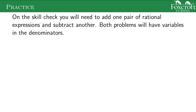On the skill check you just have to add one pair of rational expressions and subtract another — two problems, but they require a fair amount of work: multiplying, FOILing, factoring, and canceling. Both problems will have variables in the denominator, more like the second half of examples we did. When doing the subtraction problem, make sure that negative distributes. Two problems, exactly what we did in this video.